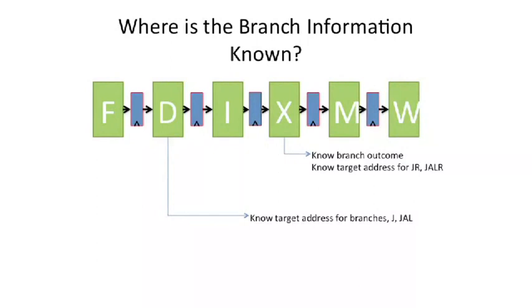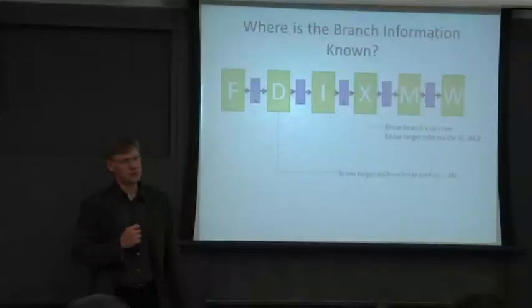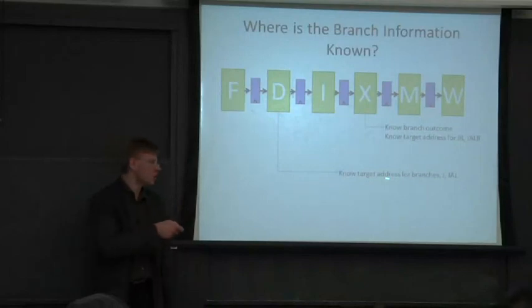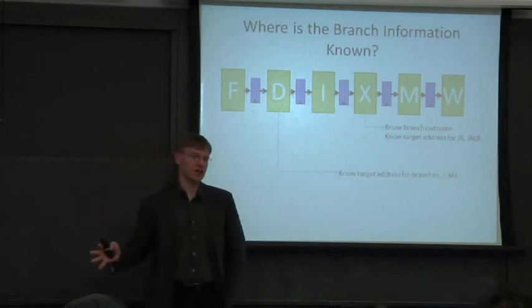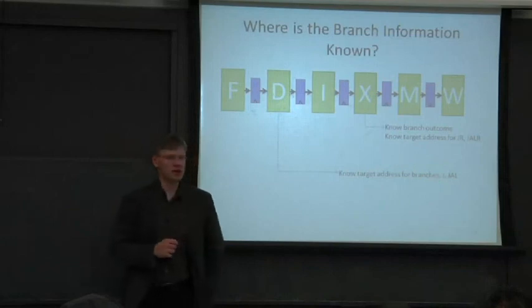Let's look to see where everything gets known. We know that our target address for branches, jumps, and jump-and-link will likely be known here. But that's not really helpful unless we know which way the branch is going or the branch outcome. Because even if we know - at least for jumps and jump-and-link, we know the outcome is taken.